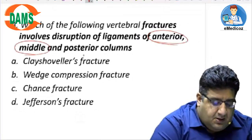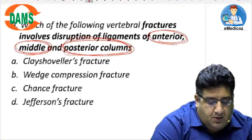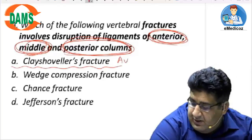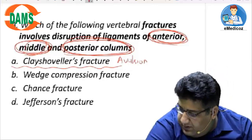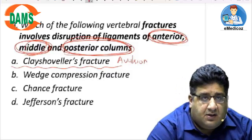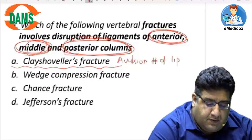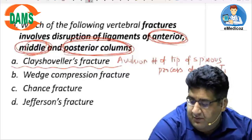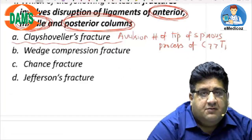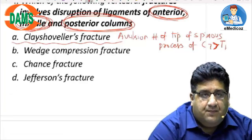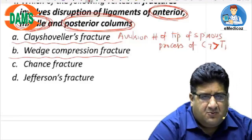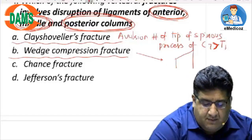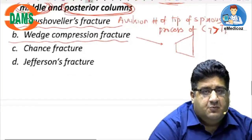Which vertebral fracture involves disruption of all three columns — anterior, middle, and posterior — in one shot? First, Clay Shoveler's fracture is an avulsion fracture of the tip of the spinous process of C7, followed by T1. Wedge compression fracture can occur due to trauma, osteoporosis, or other causes — it is an anterior or posterior wedge fracture but does not disrupt all three columns.